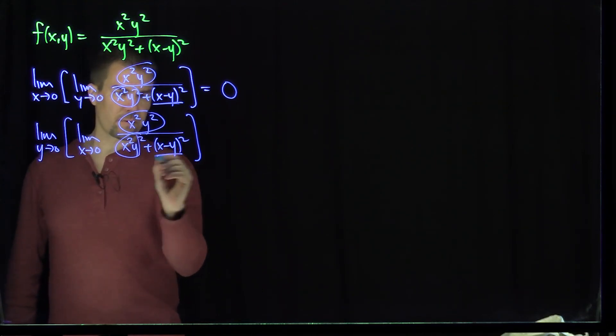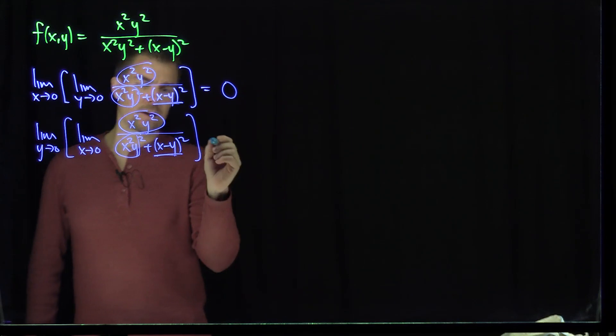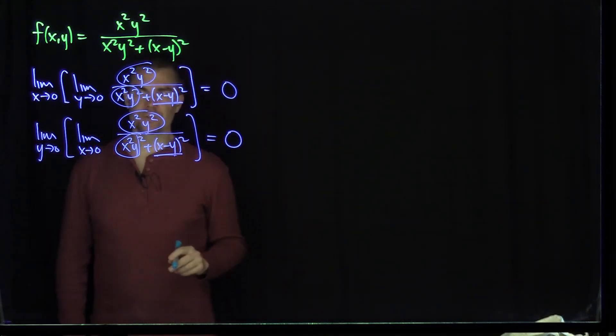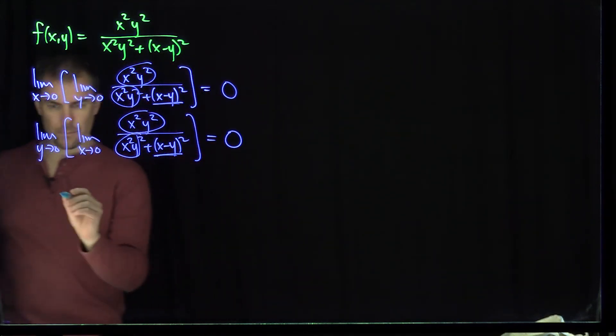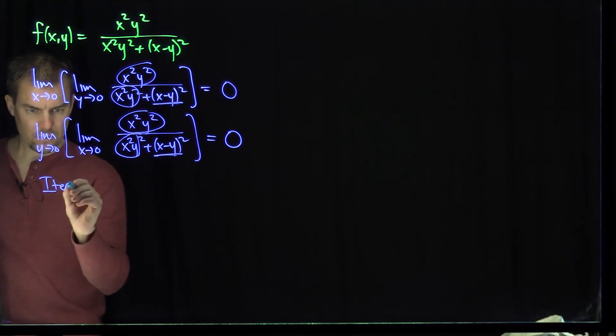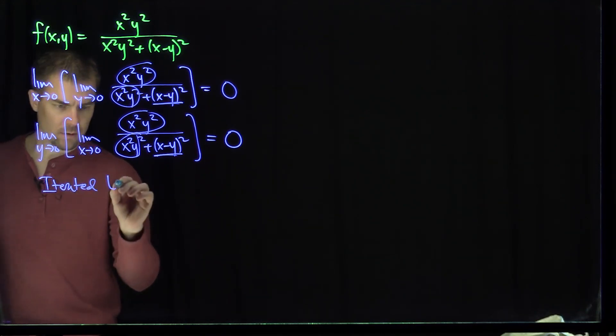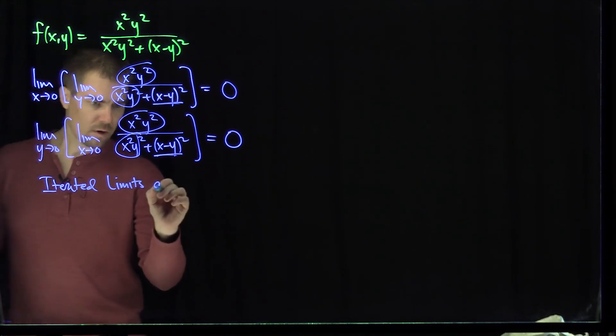this term will go to zero, and this term will be fixed in a positive y squared, so we'll get a zero over here as well. So the iterated limits are both zero. So the iterated limits of this function are both zero.